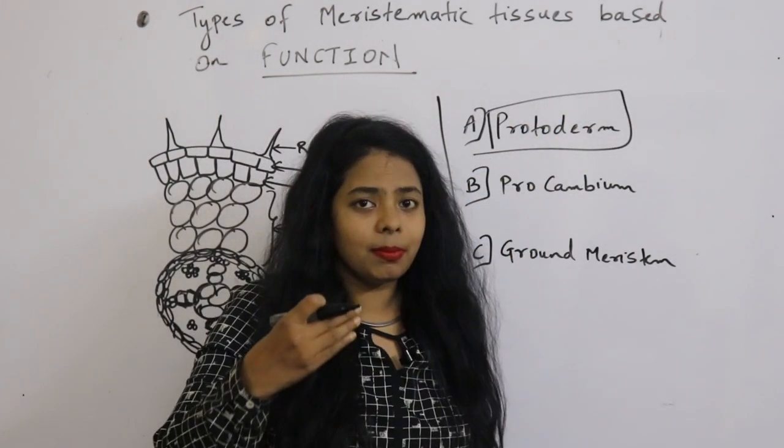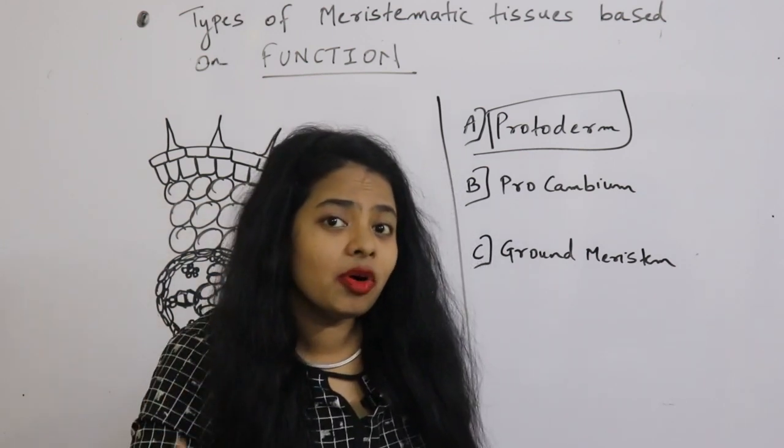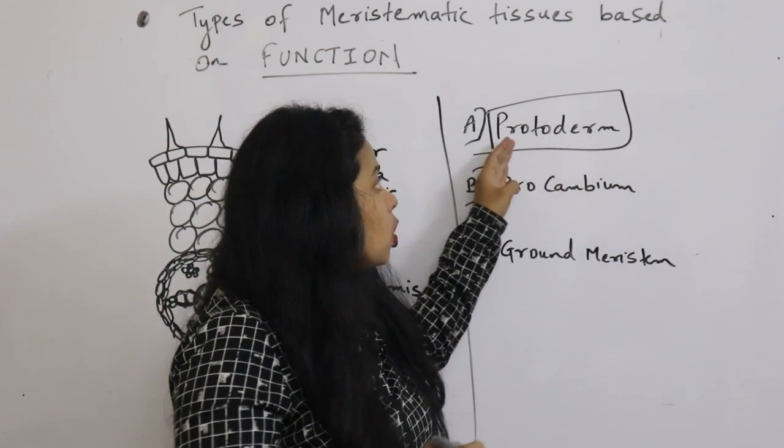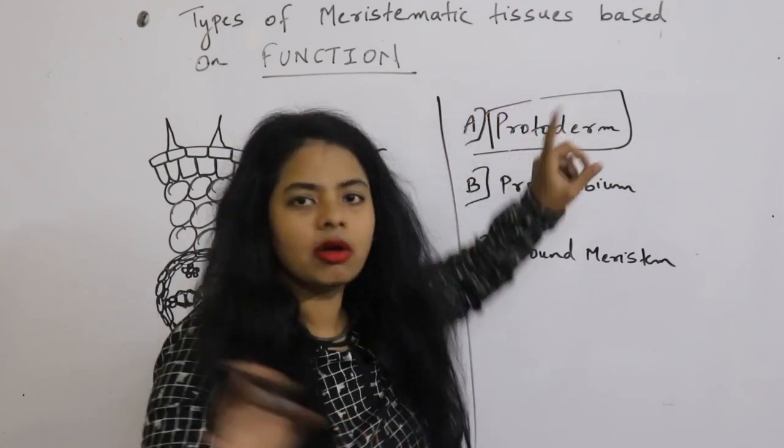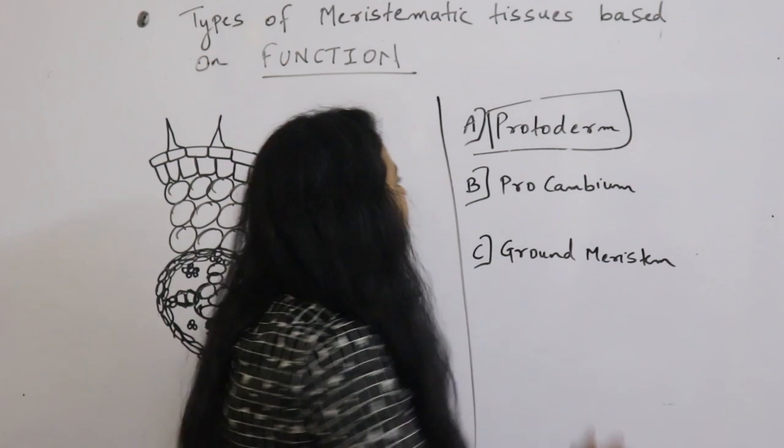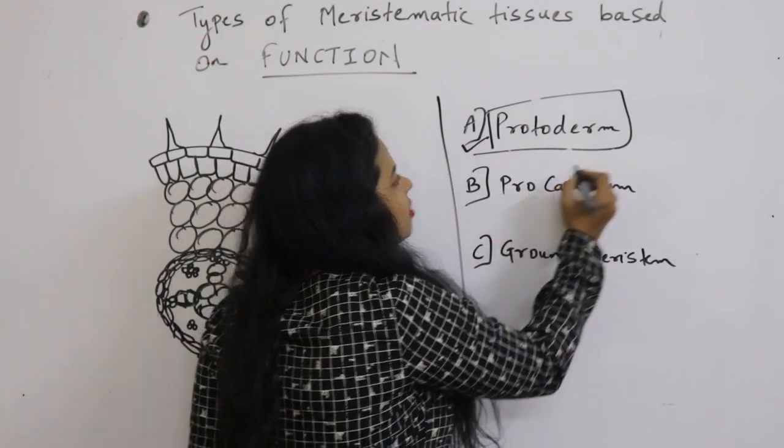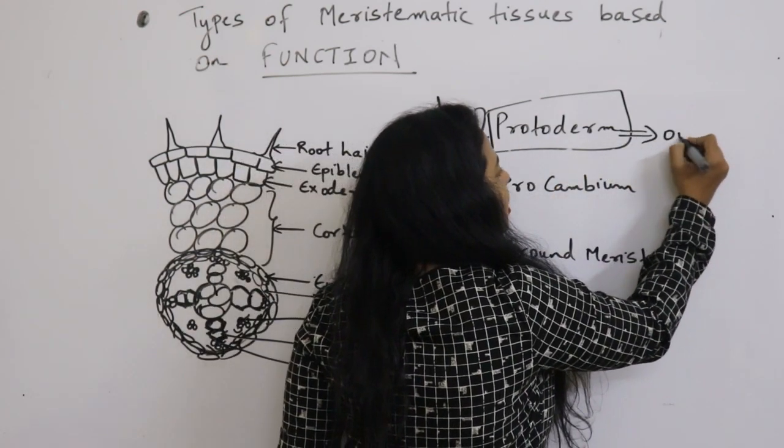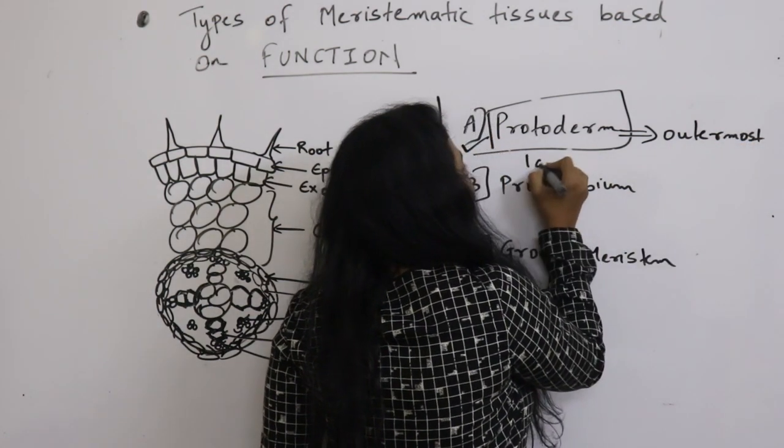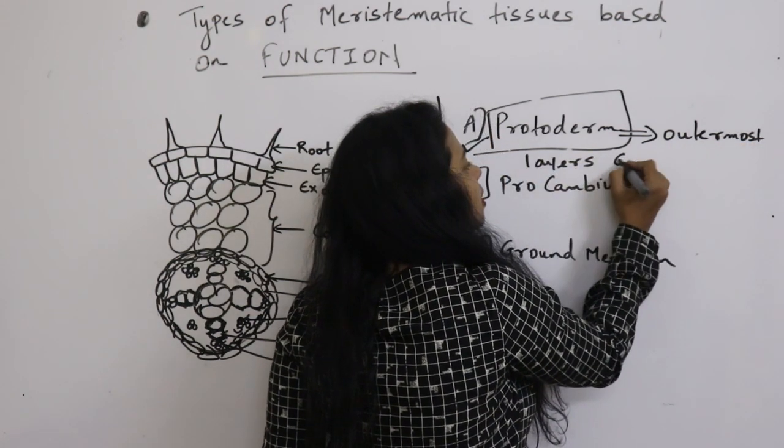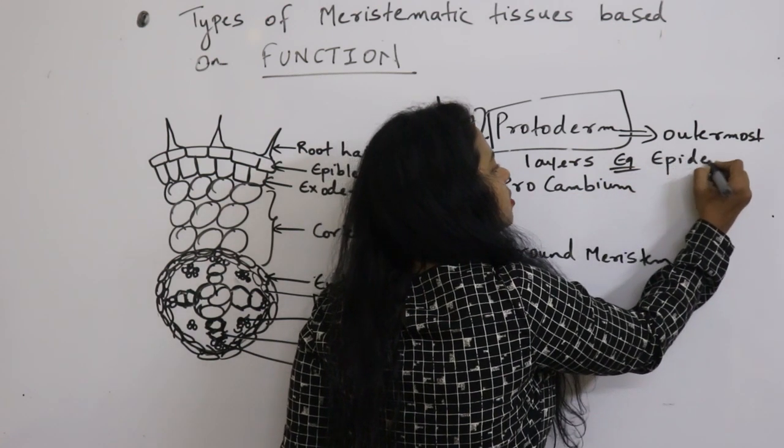For example, if it is epidermis, before the epidermal layer, protoderm is present. This is the mother of epidermis. So protoderm gives rise to the outermost layers, for example, epidermis.